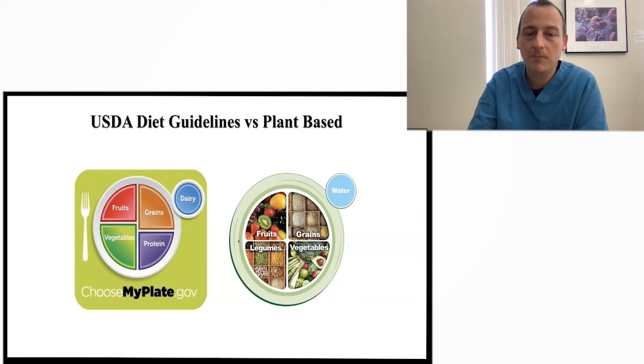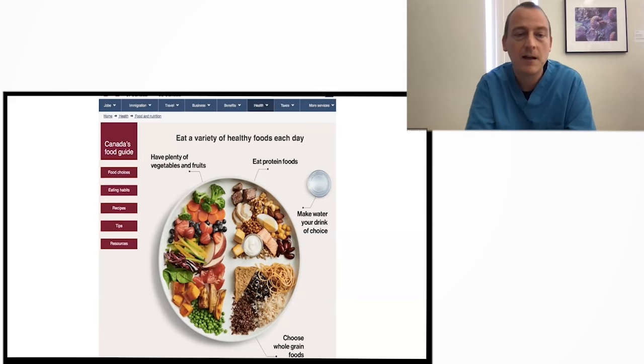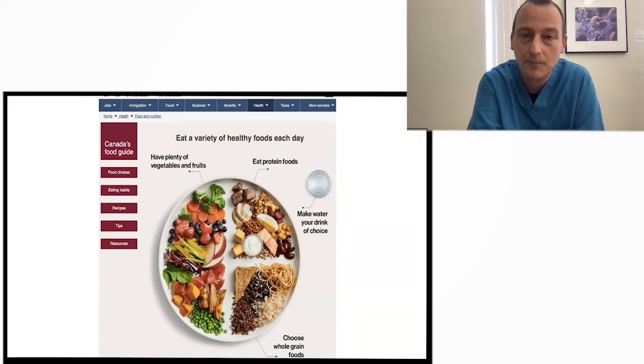That is almost the way the Canada food guide is. They said make water your drink of choice. They removed dairy as a food group. And they do say eat protein foods and emphasized to eat predominantly plant-based proteins. They do show some animal-based proteins here, but when you read their guidelines, they're showing tofu, lots of beans, lentils, nuts. They are emphasizing plant-based protein. This is a good step in the right direction.